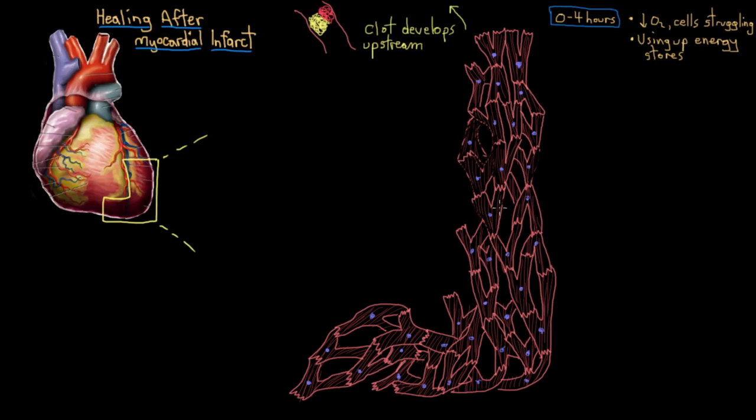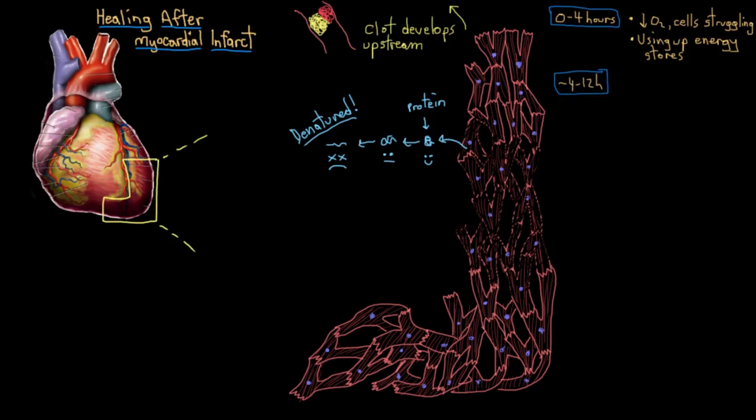So after about four hours, their membranes start to become leaky, and enzymes start denaturing, or breaking down these structural proteins of these cardiomyocytes. And other proteins inside the heart muscle cell begin to unravel and die off as well. But as you can see in this little picture here, the relative architecture of these dead cardiomyocytes is basically preserved for a few days after they die.